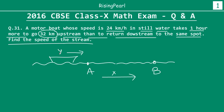When the boat is going from A to B, the stream is helping. So the total speed will be the speed of the boat plus x. In other words, if the speed of the boat is faster the boat will reach point B more quickly. So let's say it takes the boat T1 time to get from A to B.